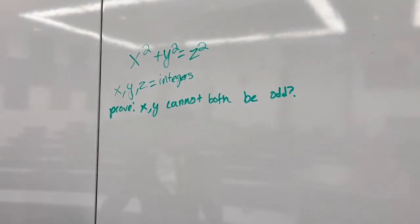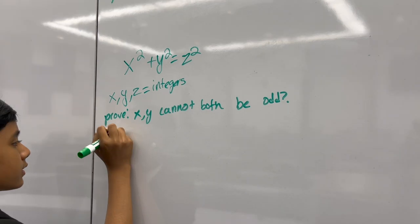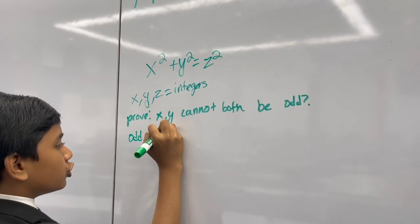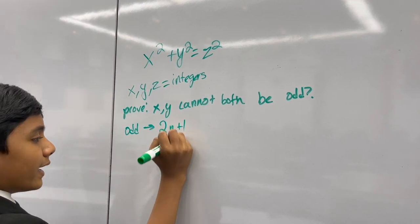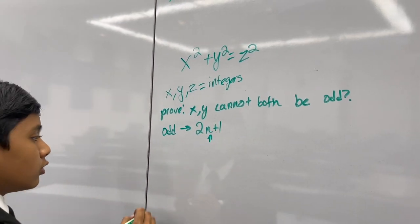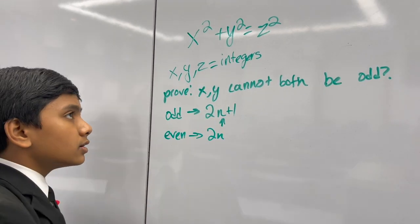Let's begin with our proof. Any odd integer can be expressed as 2n plus 1, where n is some integer in general, while any even integer can be expressed as 2n.